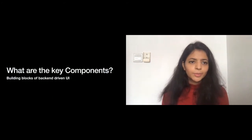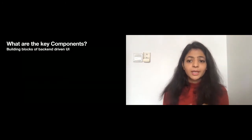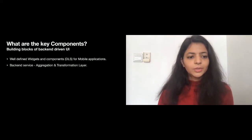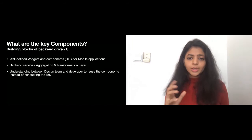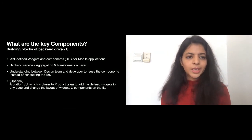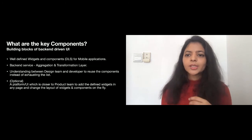Let's talk about what are the key components of making your backend-driven UI. It's also known as backend for frontend setup. First, you need to have well-defined components and widget structure for your mobile application, both for Android and iOS. Next, you need a backend service which would be an aggregation and transformation layer. This acts as a middle layer to aggregate data from your upstream APIs and transform the data in the form of components and widgets sent to the mobile team. Then, you need understanding between the design team and developers to reuse components instead of creating new ones every time. Fourth, it's optional: maybe a platform or UI closer to the product team to add new components so they can change things on the fly with minimum developer effort.